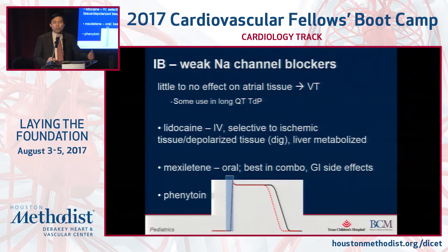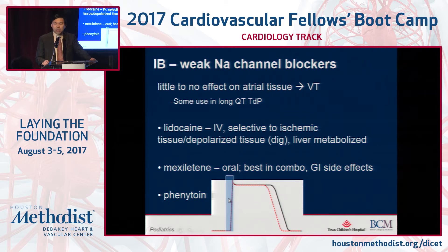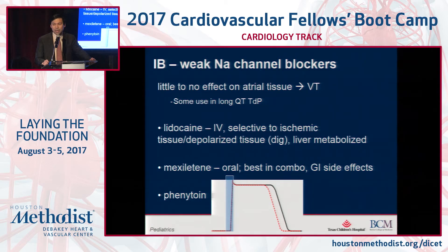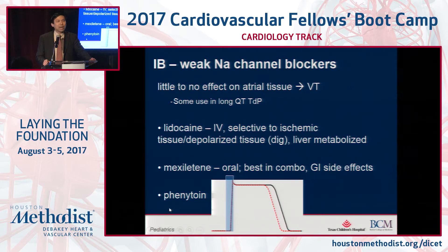The 1B agents are the weak sodium channel blockers. They have very little to no effect on atrial tissue, so their primary use is going to be in ventricular tachycardia. Some use them to shorten the QT in long QT syndrome. Notice it's such a weak sodium channel blocker that it doesn't even prolong your QRS — it's very mild and actually shortens the QT interval. Lidocaine is the IV form and tends to selectively bind in ischemic tissue, so we use it in MI patients having VT; it's metabolized in the liver. Mexiletine we like to think of as the oral version of lidocaine — best used in combination as a TID medicine but can have GI side effects. Phenytoin, or Dilantin, is also a 1B weak sodium channel blocker but we don't tend to use it clinically.